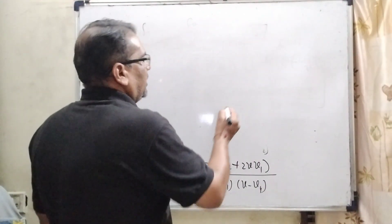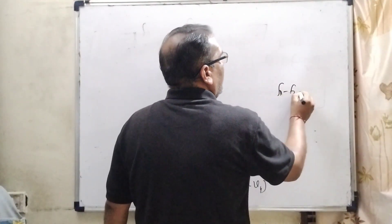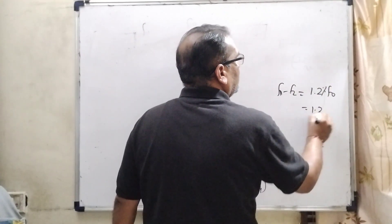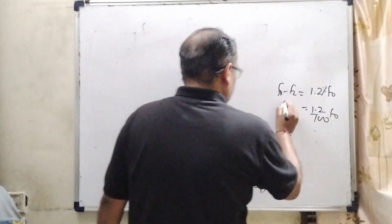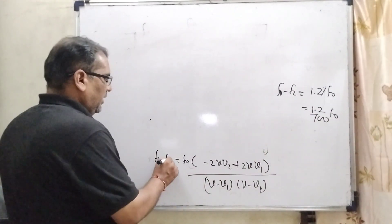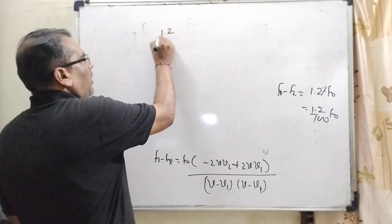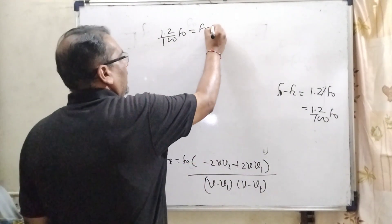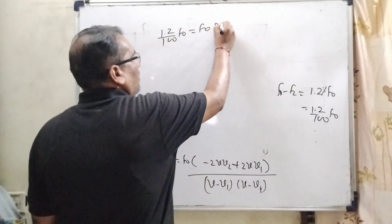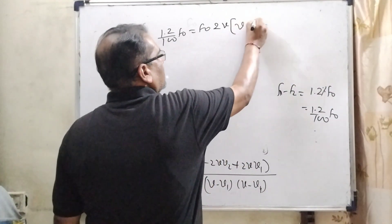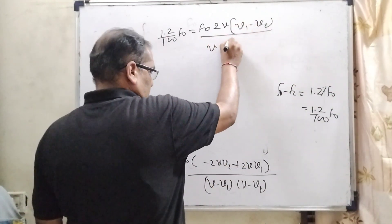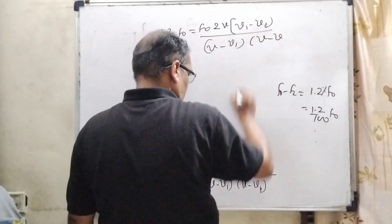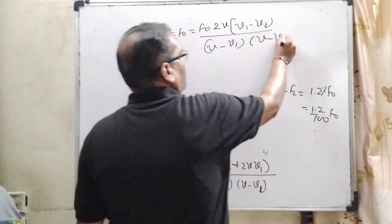Here, as per the question, the difference between the two frequencies F1 minus F2 is equal to 1.2% of F0. It means 1.2% of F0. So, in the place of F1 minus F2 can be written as 1.2 upon 100 F0 equal to F0. Here, 2 gets common and V also gets common. V1 minus V2 upon (V minus V1) times (V minus V2).